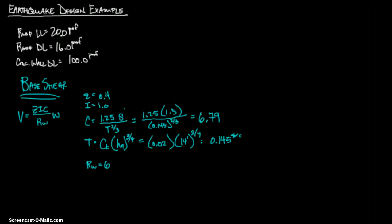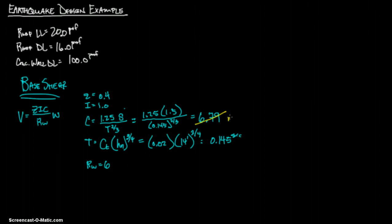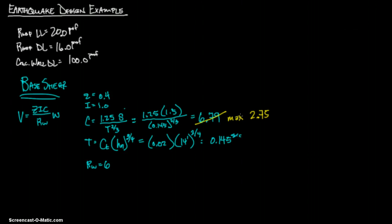Now we have everything. But remember, the maximum C value you can use is 2.75, as stated in the code on page 83. That maximum applies mostly to lower periods and shorter buildings which have higher C values, so you just cap it at 2.75.